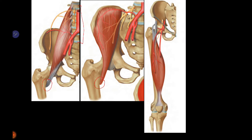Rectus femoris is a special muscle because it has two heads. The direct head arises from the anterior inferior iliac spine, and the indirect or reflected head arises from the acetabular rim. It crosses both the hip and knee joints and inserts over the patella along with the other quadriceps femoris muscles.